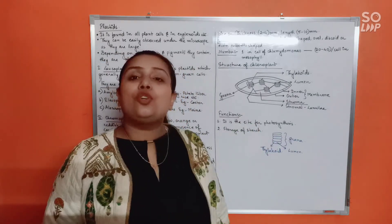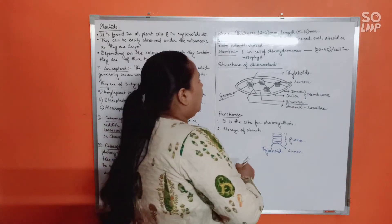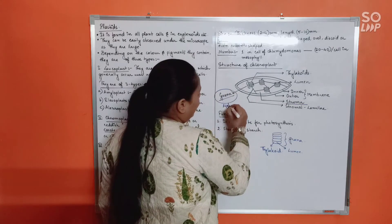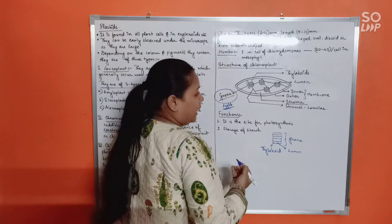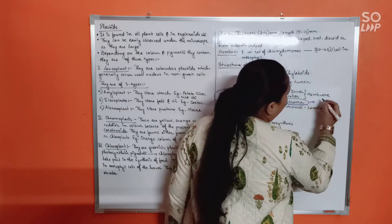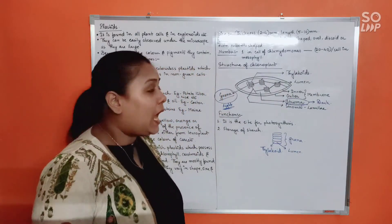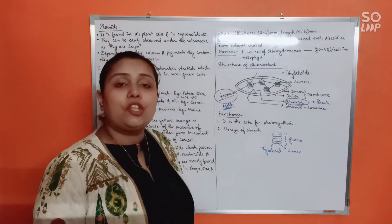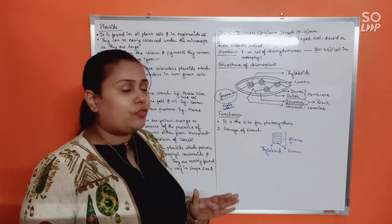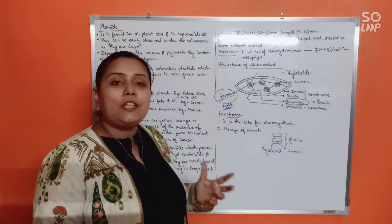Chloroplast shows a clear division of labor: the grana is the part where light reactions take place, whereas the stroma is the part where dark reactions take place.